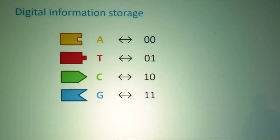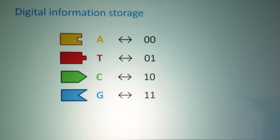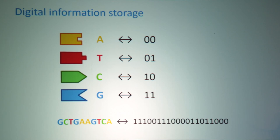Crick and Watson must have spotted this as soon as they discovered the structure of DNA: it can be used for information storage — that's what it's all about. I could represent C, G, A, and T by two-digit binary numbers, and then any binary sequence could be represented as DNA. People have taken email addresses and encoded them as DNA. So DNA is clearly a digital information storage system. But it turns out it's much more than that.